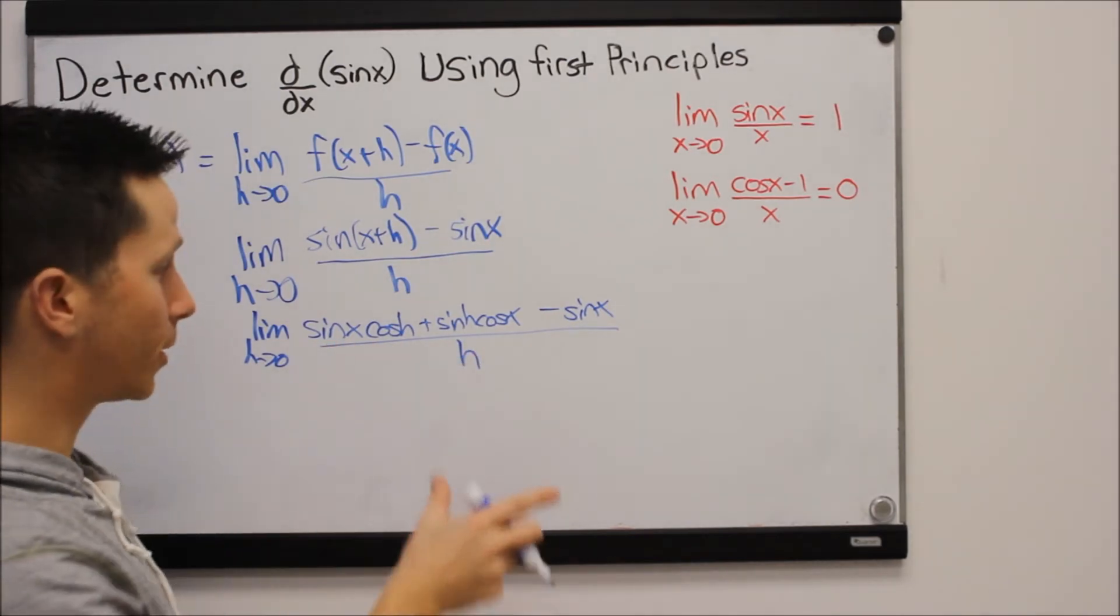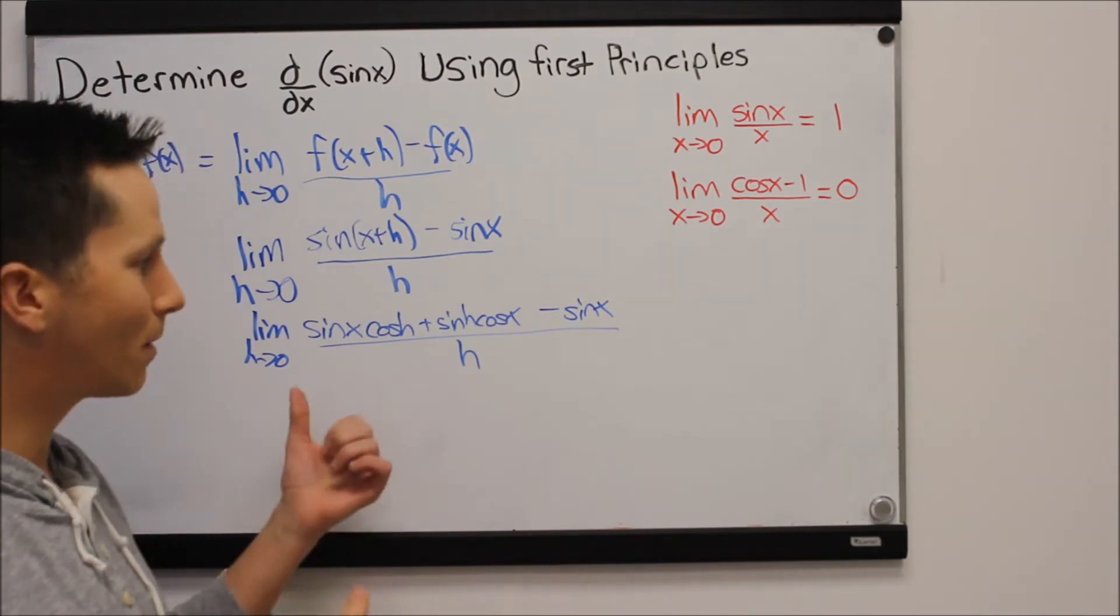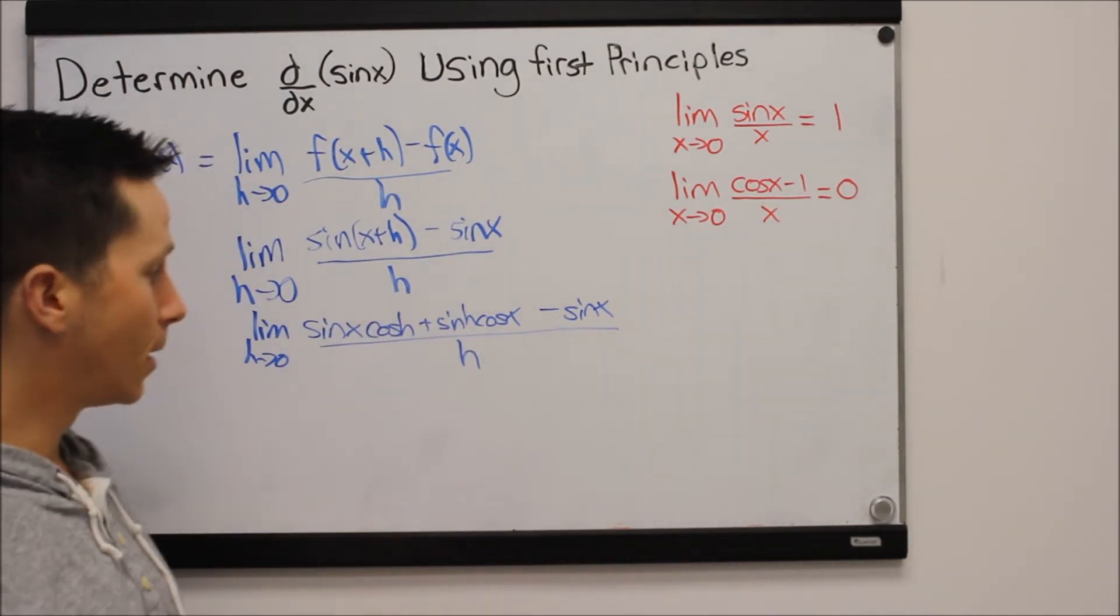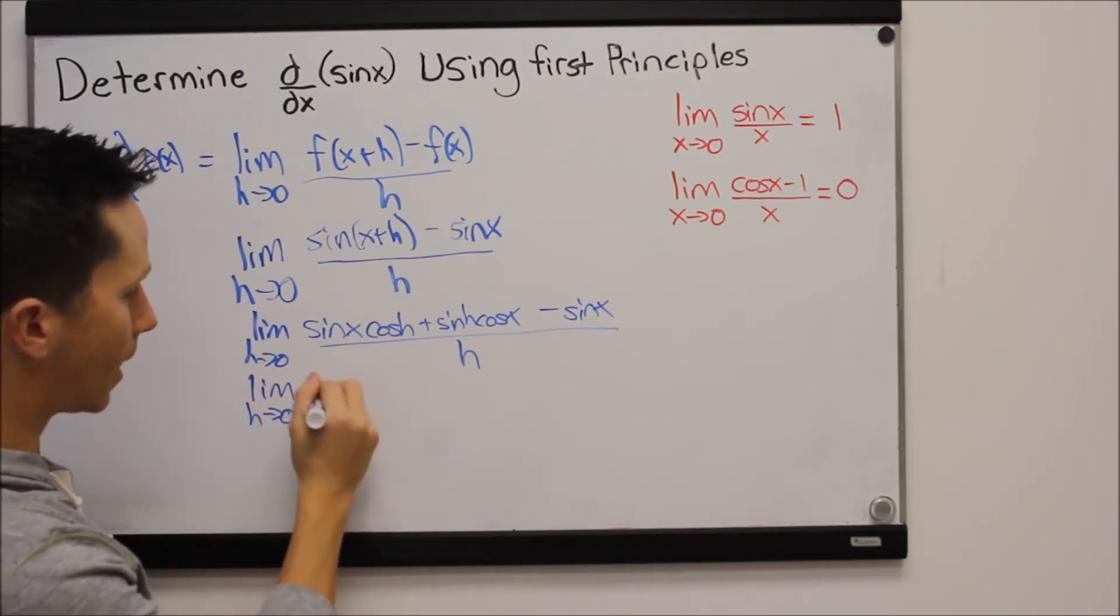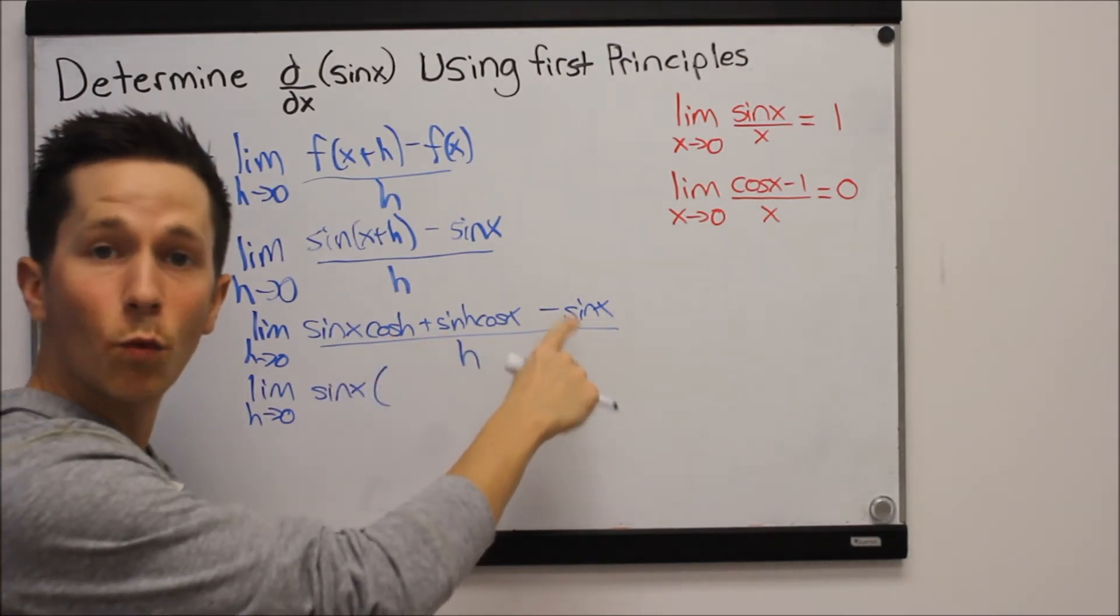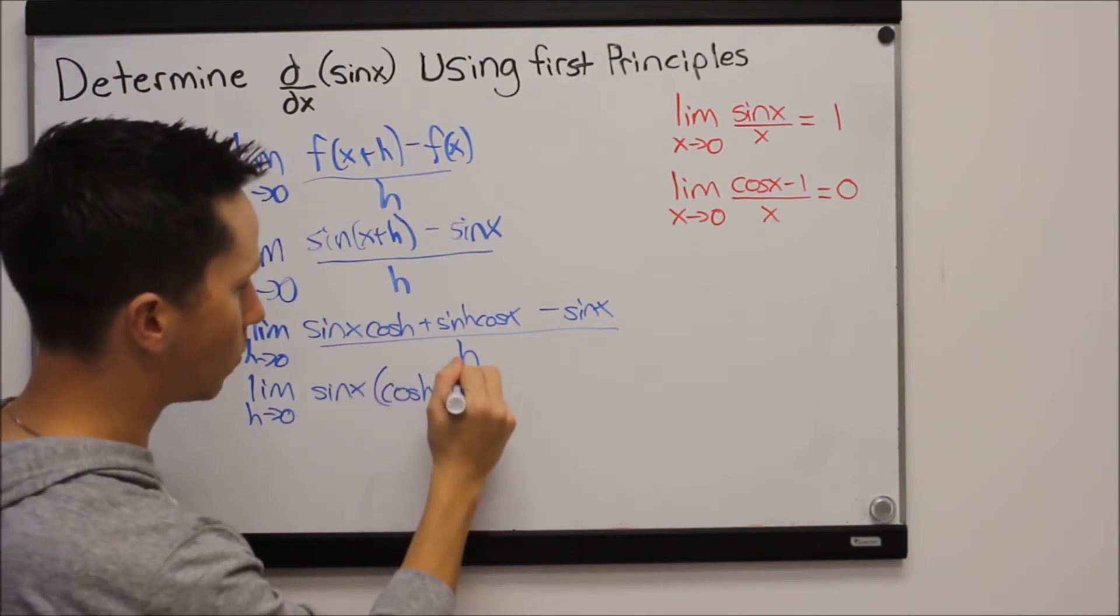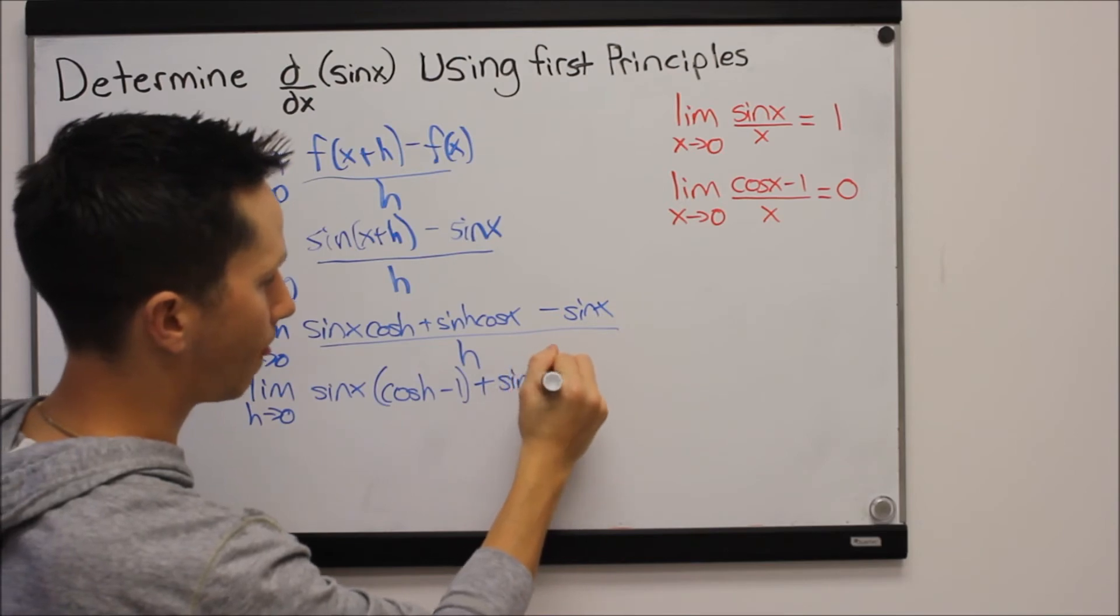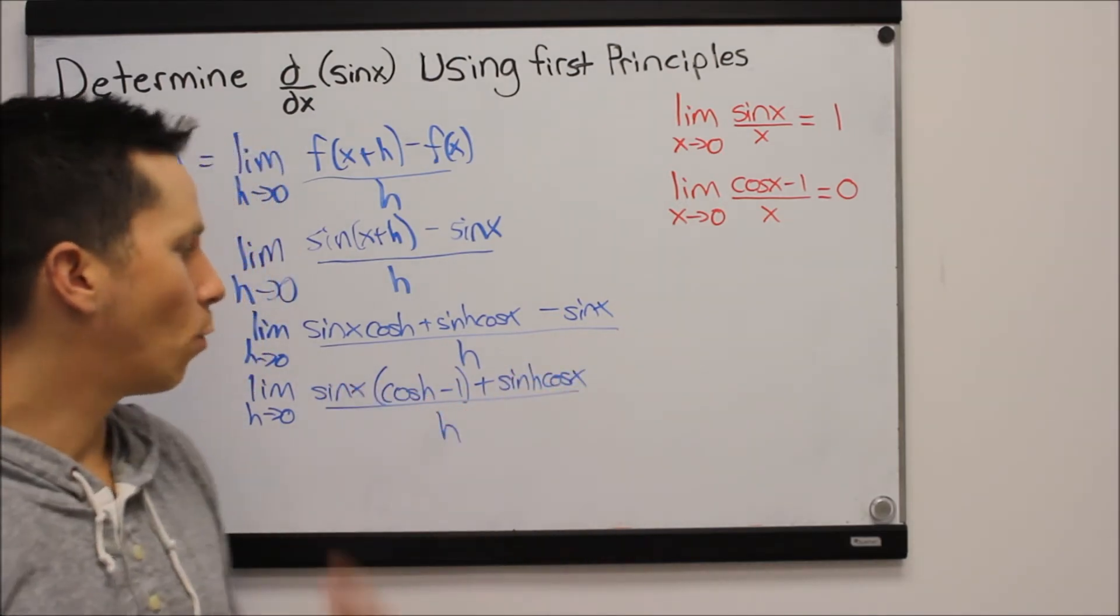Now here's the big trick in this question. Can we combine any two terms? Well none of them are perfect but at least these two terms have a sine x in them. So I'm going to group those together and factor out that sine x. So I'm going to bring a sine x out to the front and I'm left with cos h minus one when we factor the sine x out of there. So cos h minus one and then we've still got this term so plus sine h cos x all over h. Why did I do that?